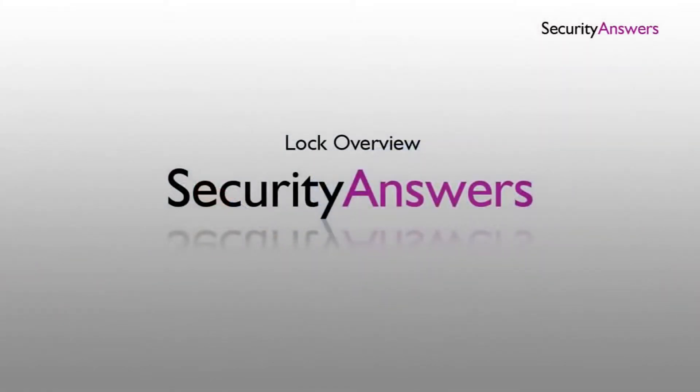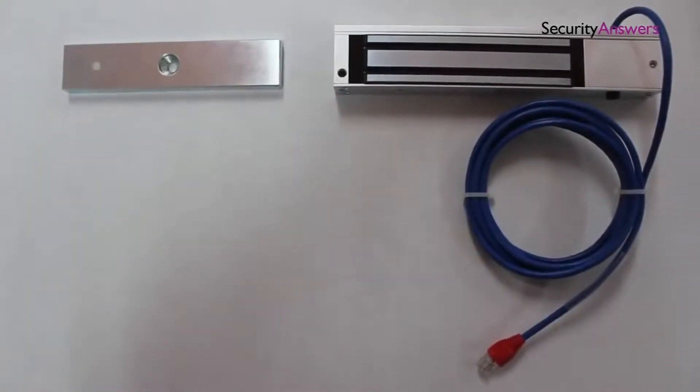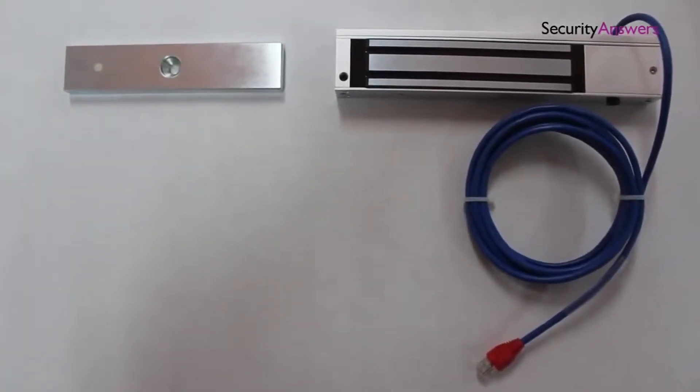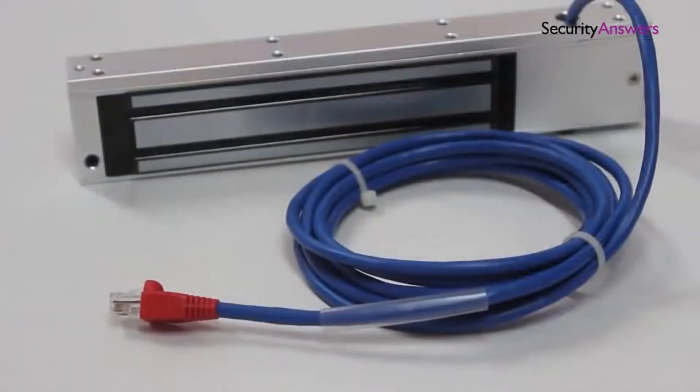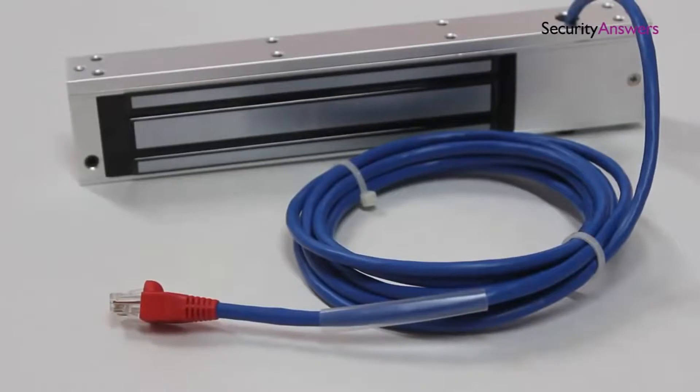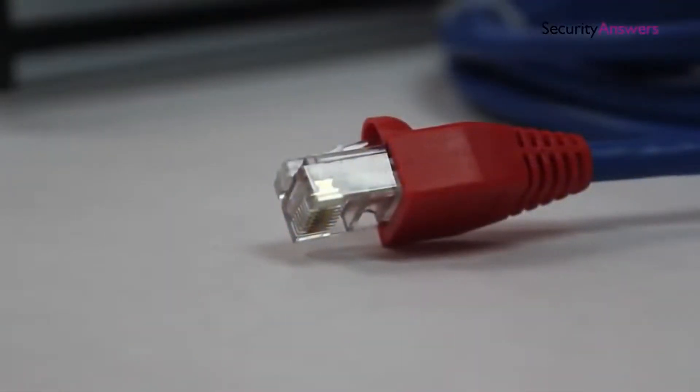Before we begin, let's take a look at the lock itself and the tools required to ensure a smooth installation. The lock comes in two halves: a thin metal plate and a thick half. The thicker piece is the electromagnet itself. This is usually the part connected to the power supply which enables the mechanism to lock.